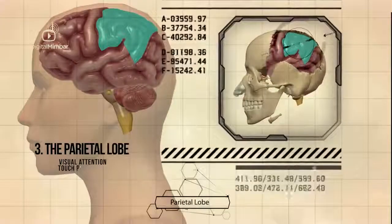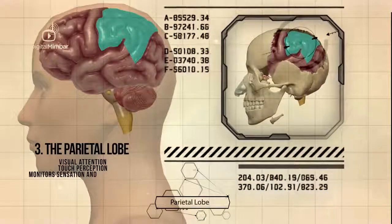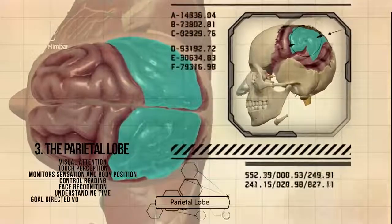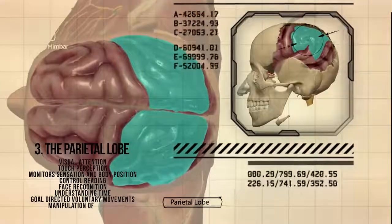The parietal lobe is responsible for visual attention, touch perception, monitors sensation and body position, controls reading, face recognition, understanding time, goal-directed voluntary movements, and manipulation of objects.